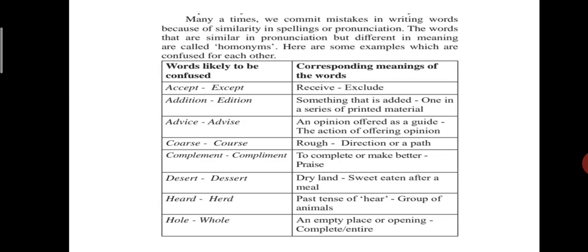Next example, desert and desert. First meaning, desert meaning is dry land. And second sweet, eaten after a meal. So, see the difference. You know the word desert. But you never know what is the exact meaning of the word. Herd, heard. Past tense of here. And next example, herd. A group of animals. Whole and whole. Whole and empty. Piece or opening. And whole. Or complete. Or entire.